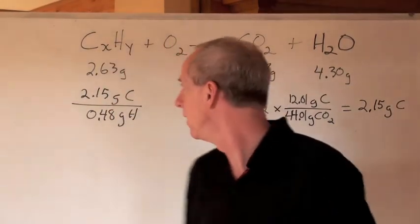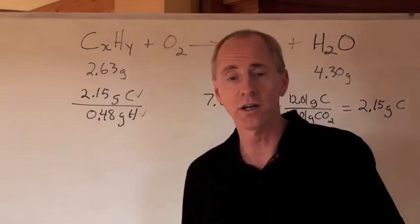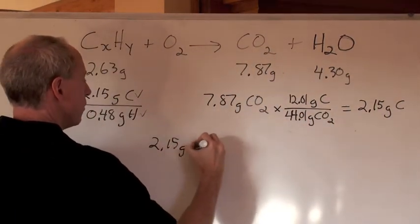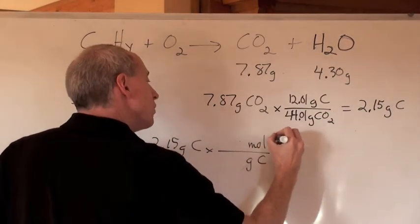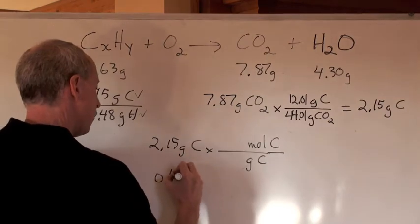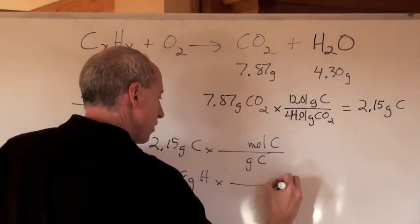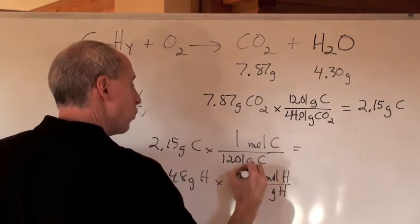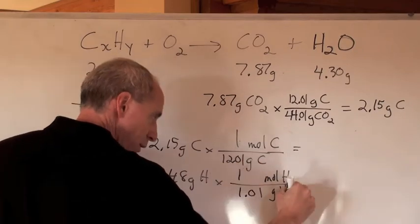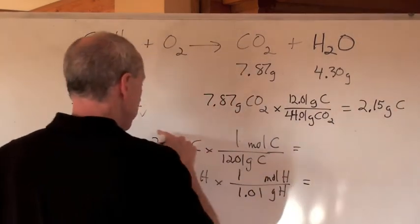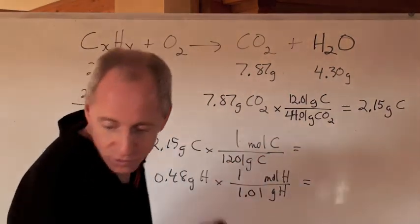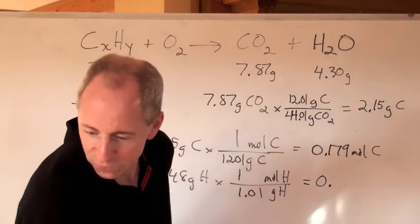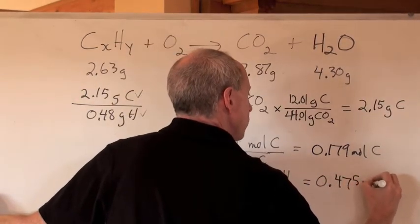Now you know the grams of carbon and grams of hydrogen. To find the empirical formula, convert to moles. Take 2.15 grams of carbon divided by 12.01 grams per mole, giving 0.179 moles of carbon. Take 0.48 grams of hydrogen divided by 1.01 grams per mole, giving 0.475 moles of hydrogen.